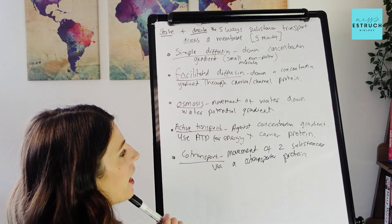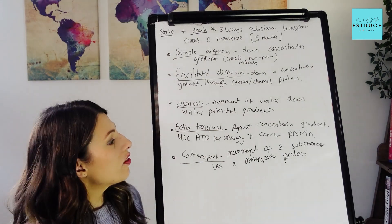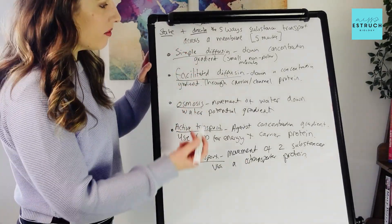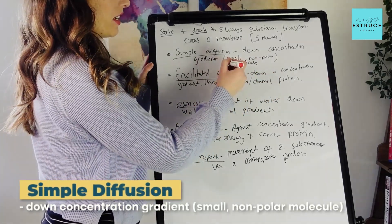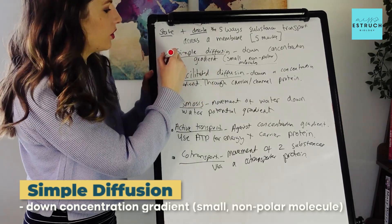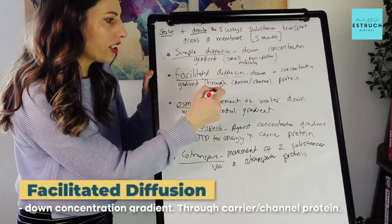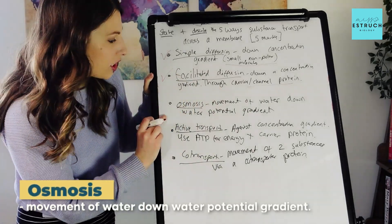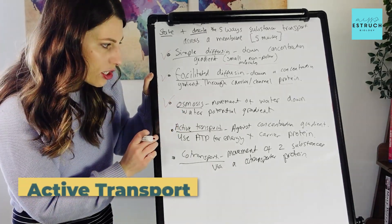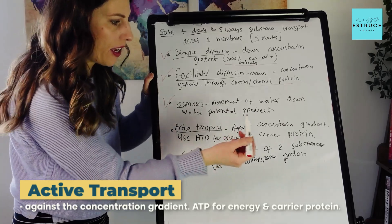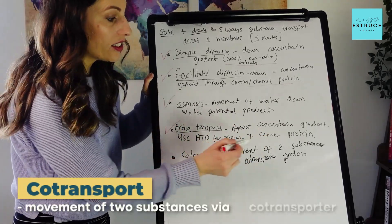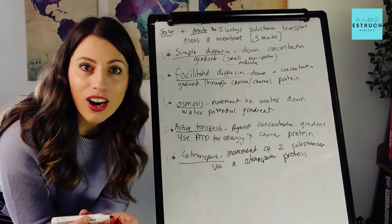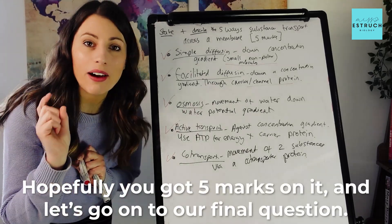We've got five points to meet the five ways and we've got our descriptions too. Looking at the mark scheme: for simple diffusion you had to say down a concentration gradient and state small non-polar molecules. Facilitated diffusion — down a concentration gradient through carrier or channel protein. Osmosis — movement of water down the water potential gradient; no need to mention partially permeable membrane. Active transport — against the concentration gradient with ATP, through a carrier protein. Co-transport — two substances transporting through a carrier protein or co-transporter protein. Five marks.